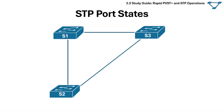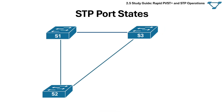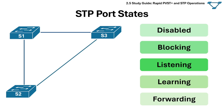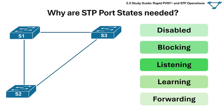Next are STP port states. STP uses specific port states to manage how switch ports behave and prevent network loops. These states — including blocking, listening, learning, forwarding, and disabled — dictate whether a port forwards traffic, learns MAC addresses, or remains inactive to avoid loops.